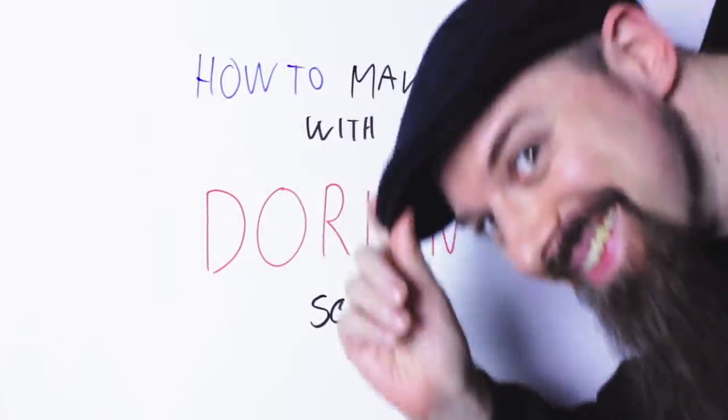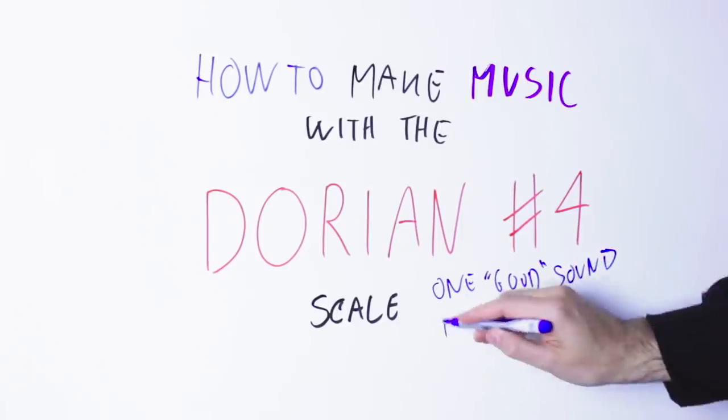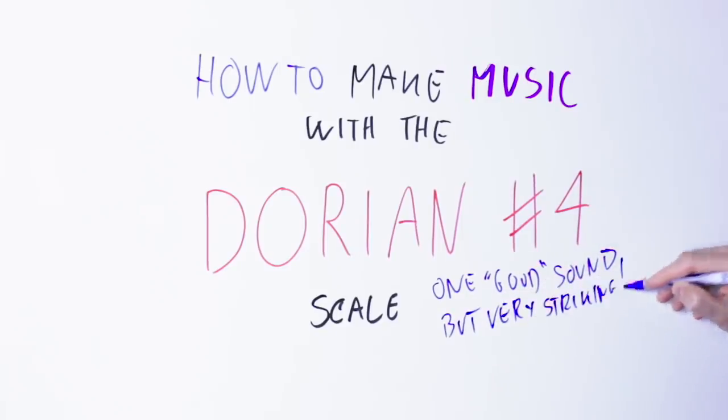Hello Internet, so nice to see you! Today we see how to make music with the Dorian sharp fourth scale. Now this scale has one sound to it, but it's a really striking and versatile sound, as you're gonna see in a moment.